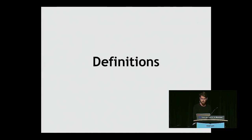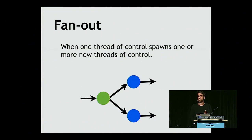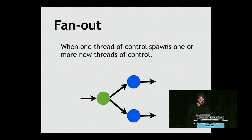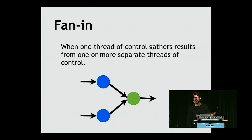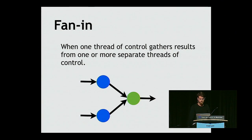Some quick definitions so we're all on the same page. Fan-out: it's when one thread of control spawns one or more new threads of control. For example, you send an email and it delivers to a bunch of different people, or you write to a database row and write out all the secondary indexes, or you spawn subprocesses to manage different parts of subdirectories. Fan-in is the other side — it's when one thread of control gathers all results from those other threads. A good example is a web app that does a bunch of queries and gets results back to construct a page.